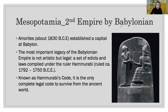The second empire was Babylon, where the Amorites consolidated their rule and established a capital at Babylon. The most important legacy of the Babylonian empire is not artistic but legal — a set of edicts and laws compiled under ruler Hammurabi, known as the Hammurabi Code. It is the only complete legal code to survive from the ancient world and has provided historians with valuable insights into the structure and concerns of Mesopotamian society.